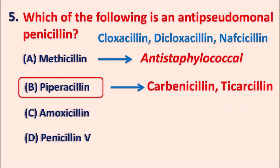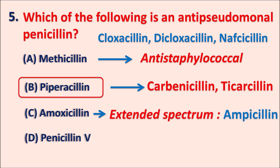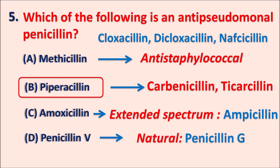The third option, amoxicillin, is a drug effective both against gram-positive as well as gram-negative infections. Amoxicillin and ampicillin are both extended-spectrum antibiotics effective against both gram-positive and gram-negative infections. Finally, penicillin V and penicillin G are natural penicillins mainly effective against gram-positive infections.